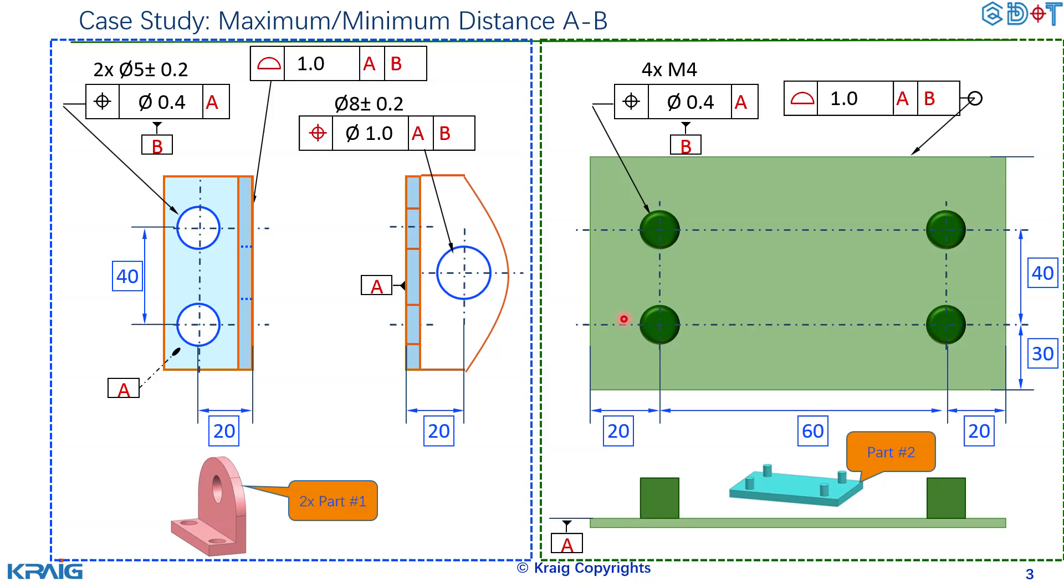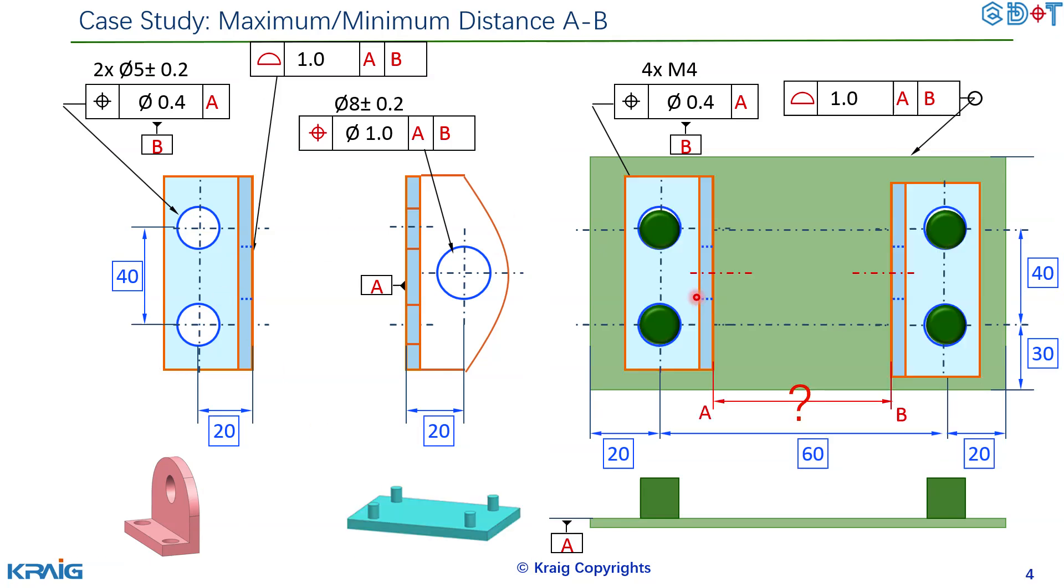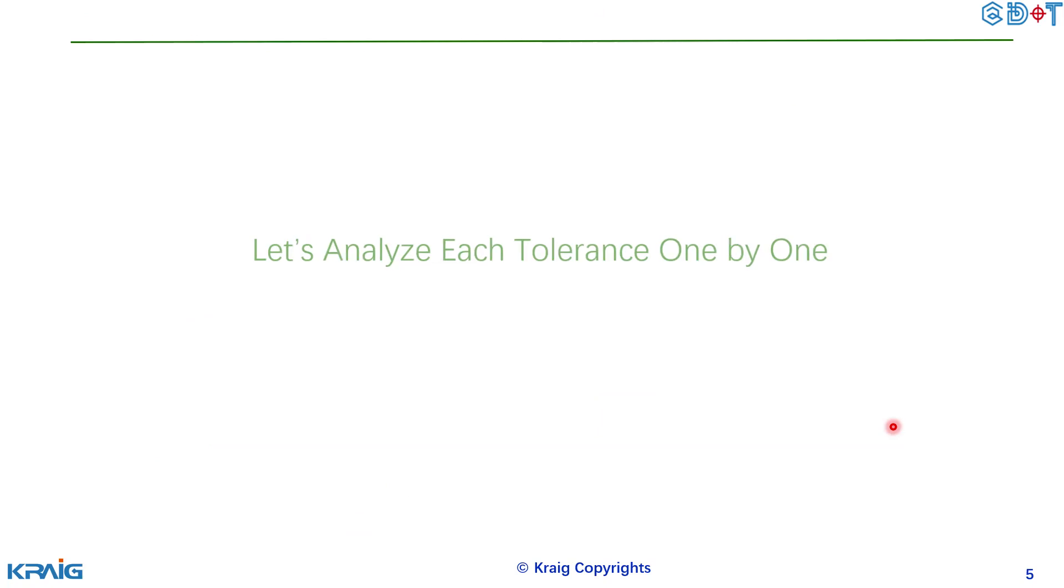So it's pretty clear we have part number one and also part number two and eventually we're going to assemble part number one to part number two. Once it's assembled we're going to calculate the maximum and minimum distance between A and B. So let's analyze each tolerance one by one.